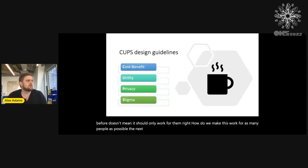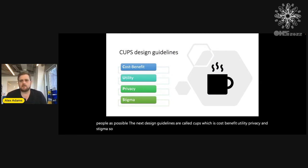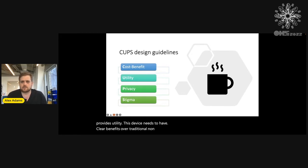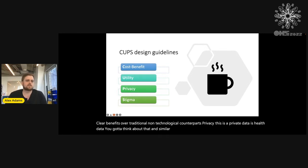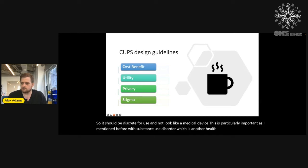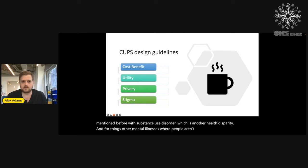The next design guidelines are called CUPS: cost-benefit, utility, privacy, and stigma. Cost-benefit means the cost of using it should be outweighed by the benefits it provides. Utility means this device needs to have clear benefits over traditional non-technological counterparts. Privacy: this is private health data — you have to think about that. And similar to privacy but very different is stigma: it should be discreet for use and not look like a medical device. This is particularly important for substance use disorder, which is another health disparity, and for mental illnesses where people aren't comfortable having others know they have it.